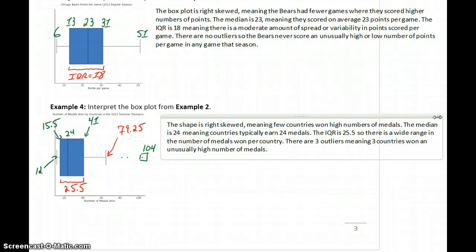To be a little more thorough there, we could go back and look at which of those three, what three countries were those, which country earned the 104 medals and those other two outlier values. I won't include those here, but that would be a good thing to include in your own written interpretations of any box plot to be very specific, making the information as accessible as possible to your audience or to your reader.